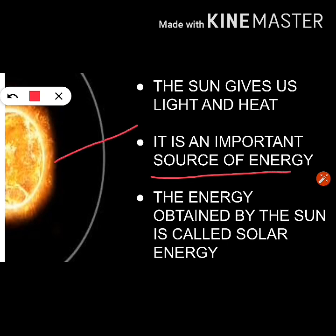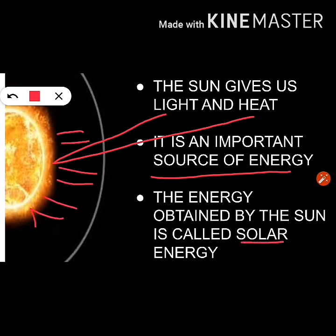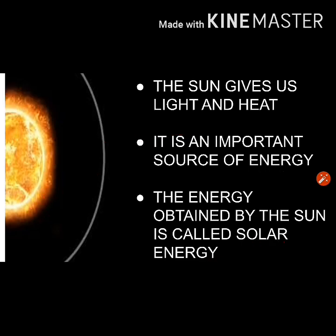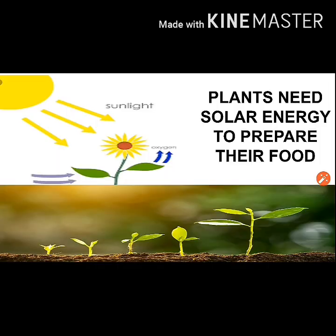The sun forms an important source of all energy. The sun gives us light and heat. The energy obtained from the sun is called solar energy. This energy has various uses — plants also use this energy to prepare their food.